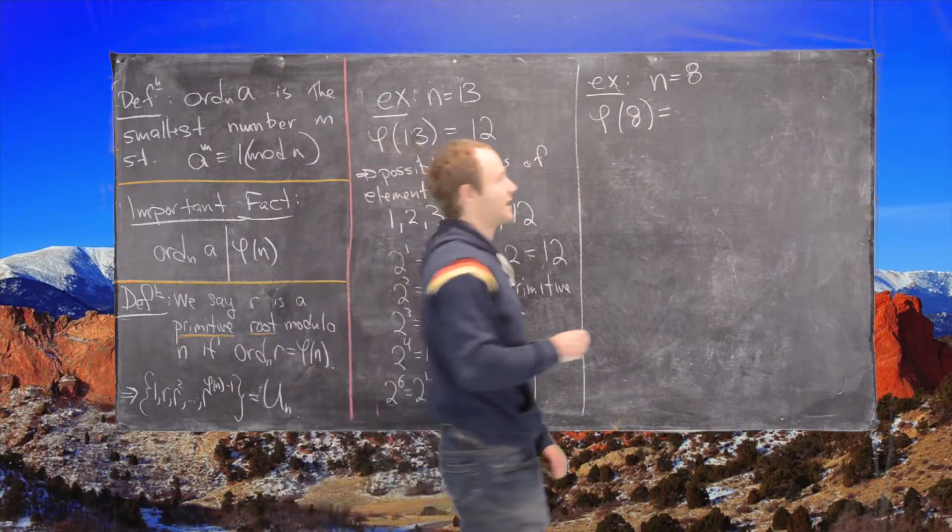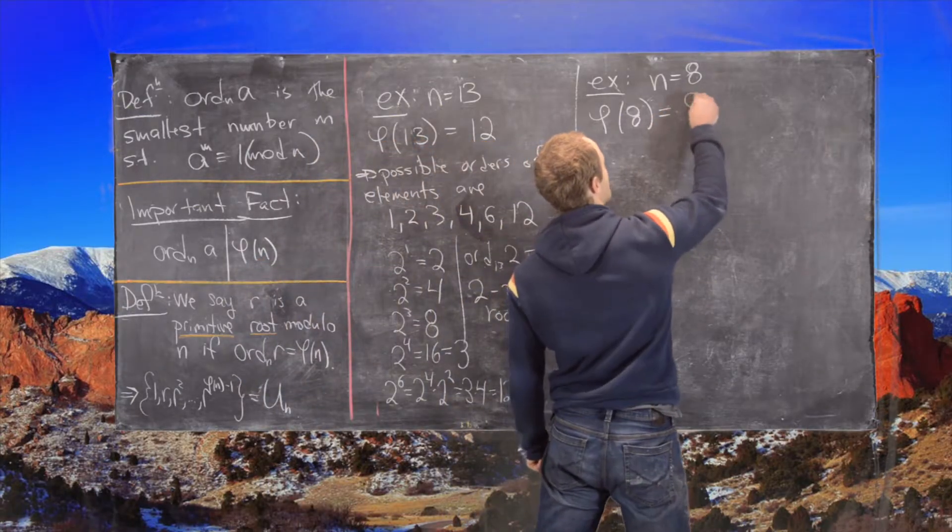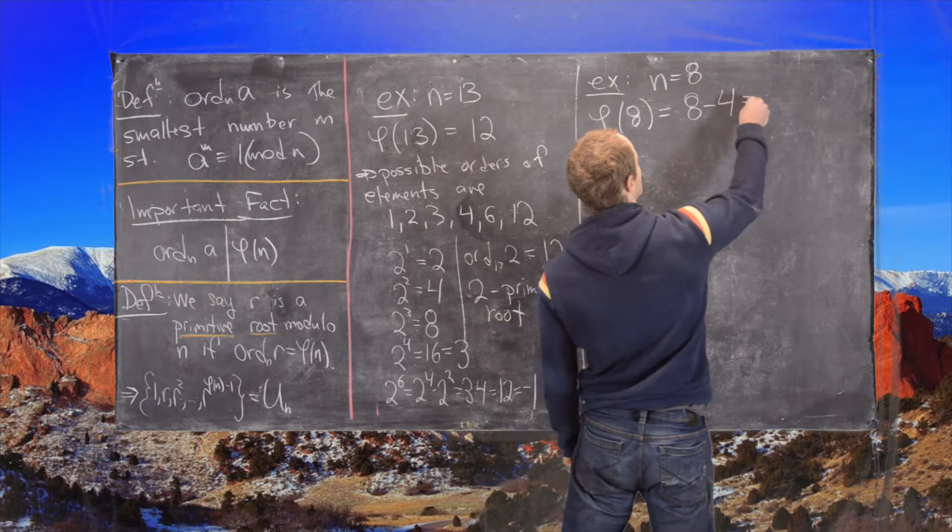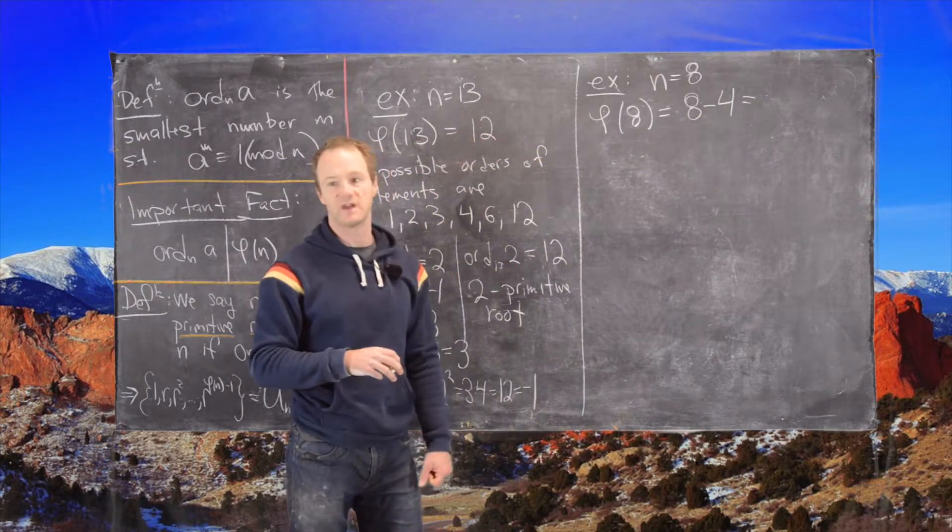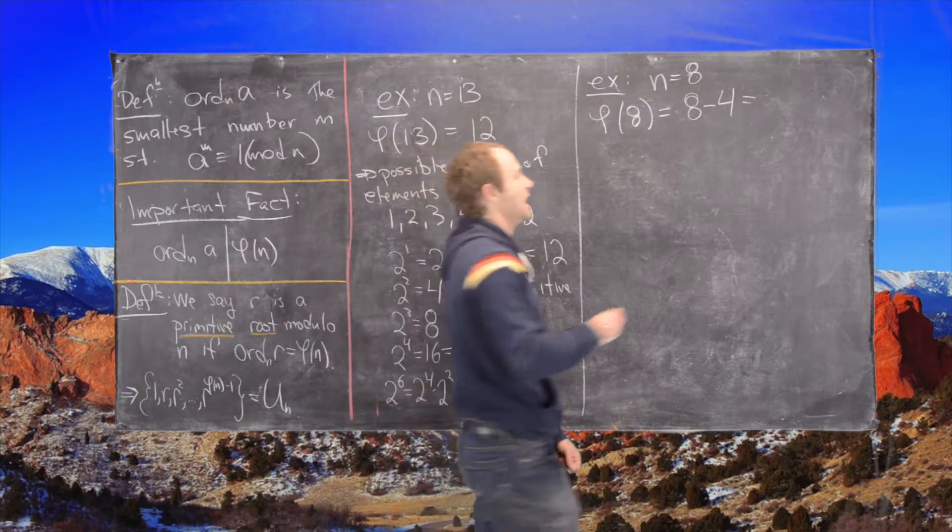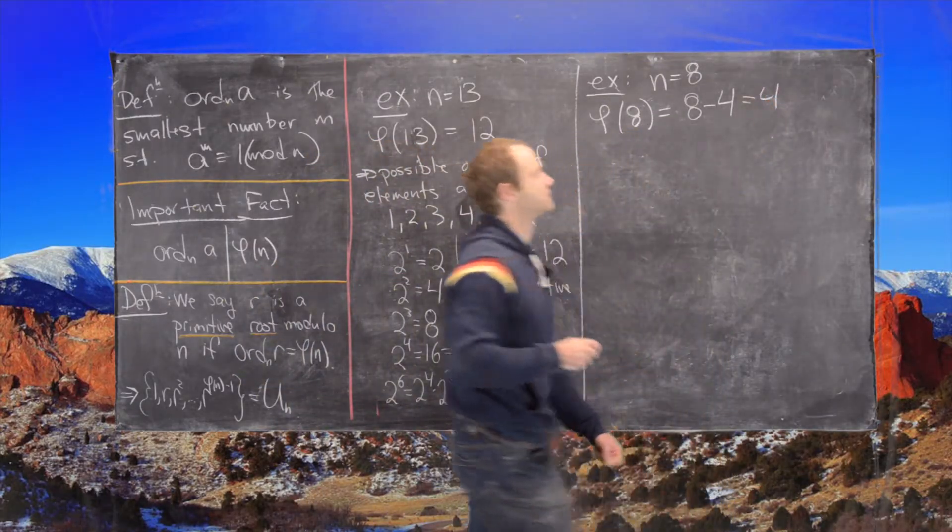So let's recall that phi of 8 is equal to 8 minus 4. In other words, 2 cubed minus 2 squared. We're using the formula for phi of a power of a prime. And that is equal to 4. Great.